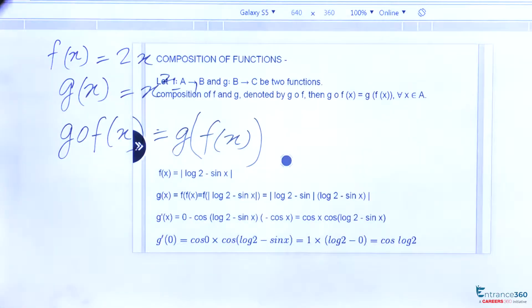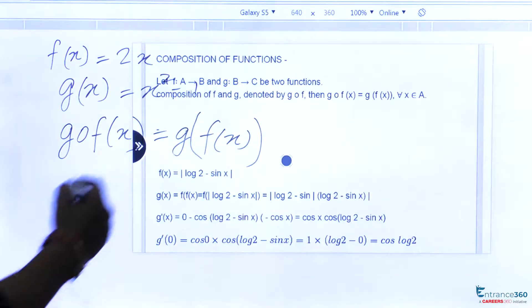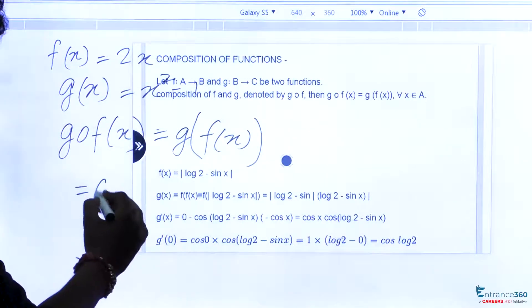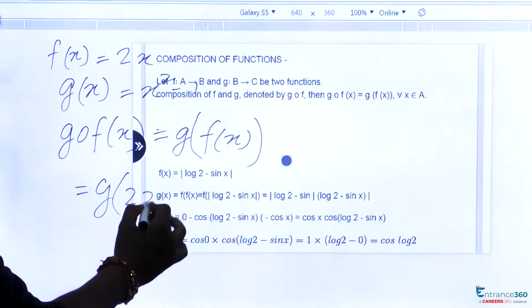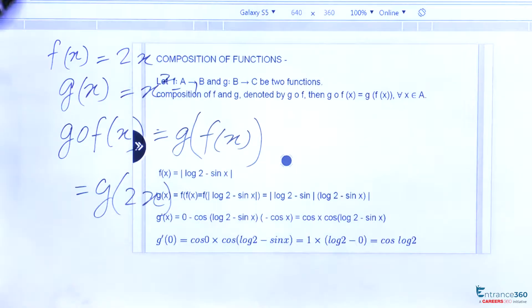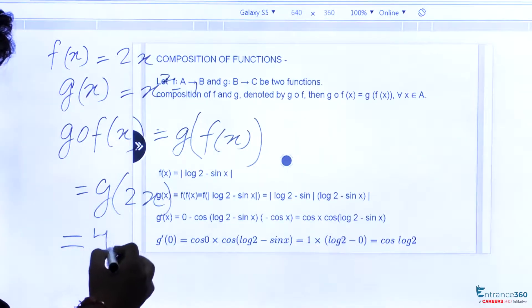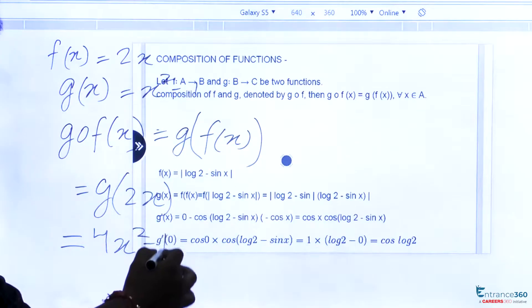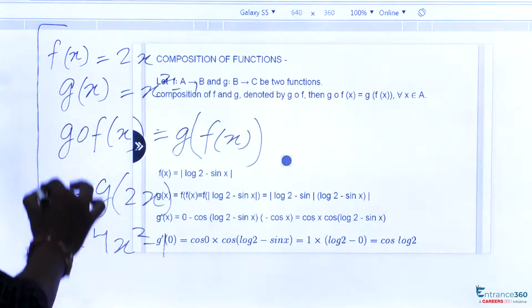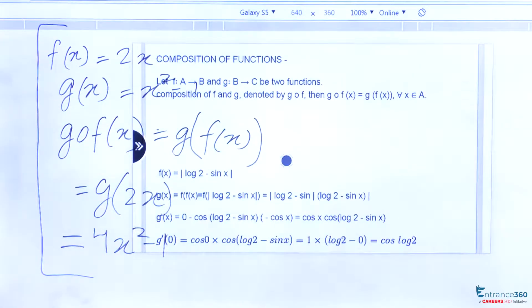As we know f(x) equals 2x, so we will have g(2x). Now we will put this 2x in g(x). So our composition of both functions will be 4x squared minus 1. This is the concept of composition of two functions which we will be using in our question.